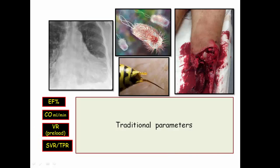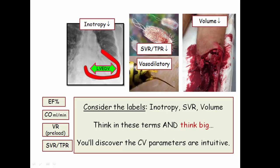So let's start with the traditional parameters. Students are asked to memorize the cardiovascular response to the different forms of shock. These parameters include ejection fraction, expressed as the percentage of blood ejected in one cardiac cycle, the cardiac output, the venous return variably expressed by preload or end diastolic volume, and systemic vascular resistance, also referred to as total peripheral resistance. Whereas these parameters generally tie students up in knots, my approach, with a little bit of common sense, renders these quite intuitive. To work your way through these parameters, just consider the category labels.